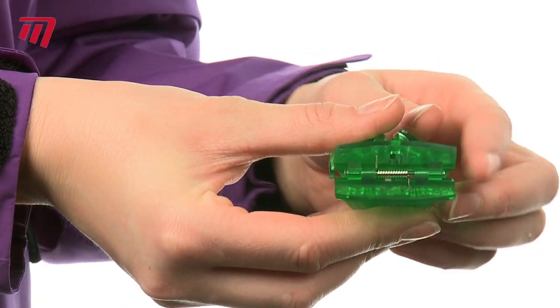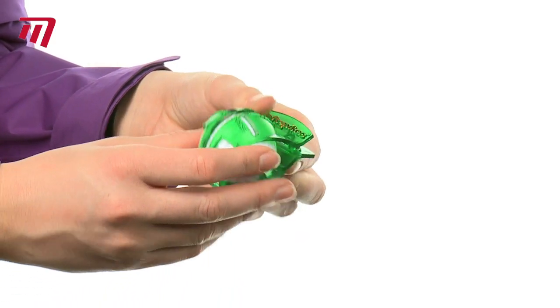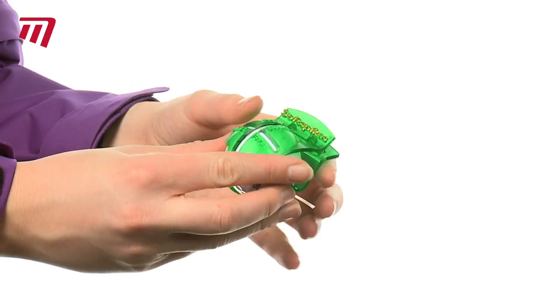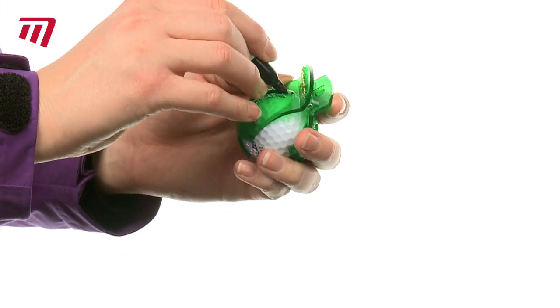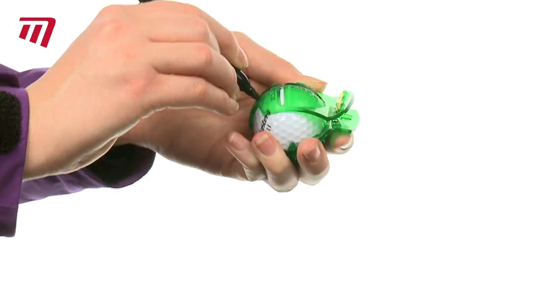The easy-to-use spring clamp holds your ball firmly in place, while you take your Sharpie pen and draw a straight line down its center. Once marked, you're ready to go.